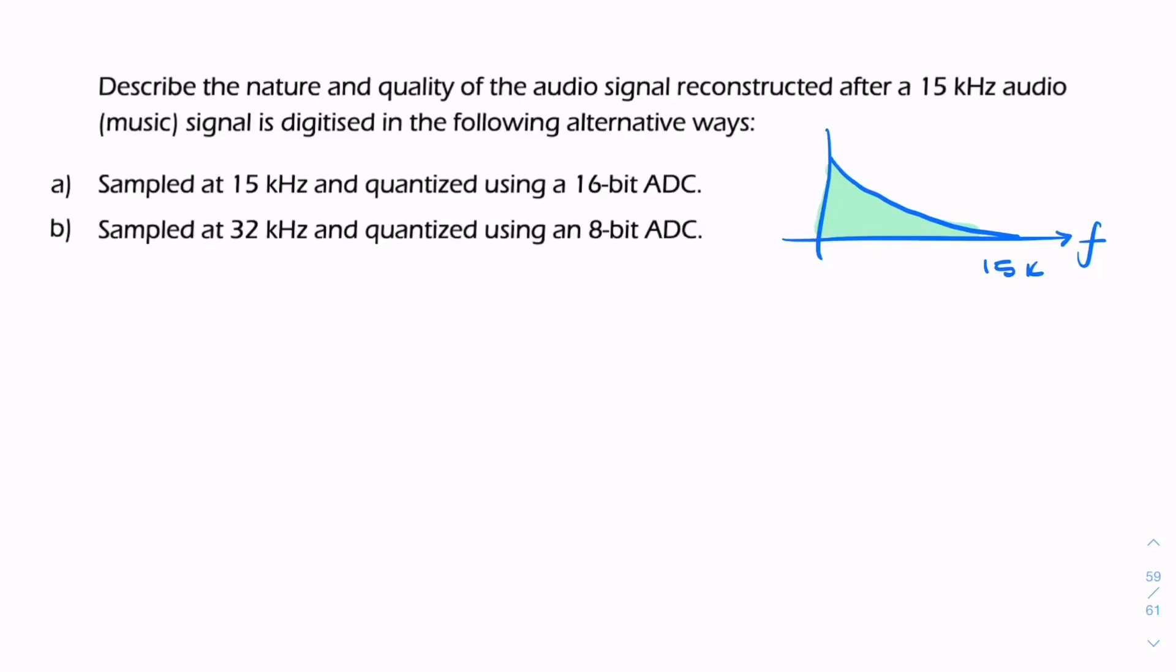This question asks us to compare two different digitization regimes. We're given a music signal band-limited to 15 kilohertz, and we have two digitization regimes: one sampling at 15 kilohertz with a 16-bit ADC, and the other at twice the sampling rate but half the bit depth.